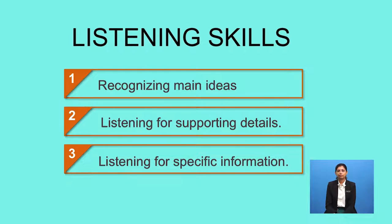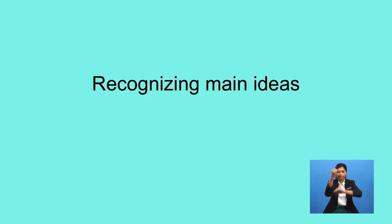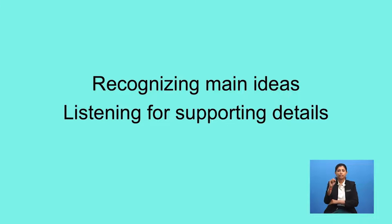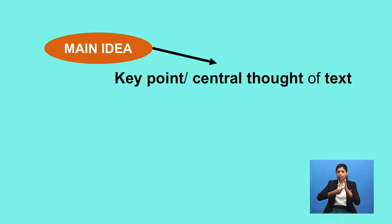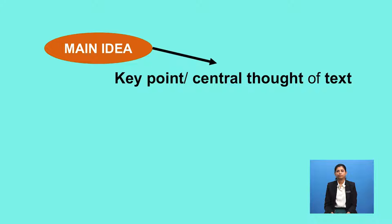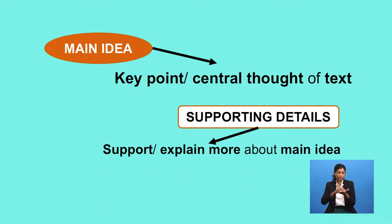Since skill number one — recognizing main ideas — and skill number two — listening for supporting details — are both related, I will cover them together. The main idea is the key point or central thought of the text. It answers questions like: what does the person want to say about this topic? What is he trying to get across? Supporting details support or explain more about this main idea.